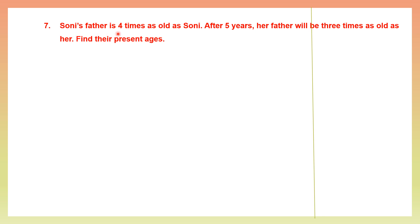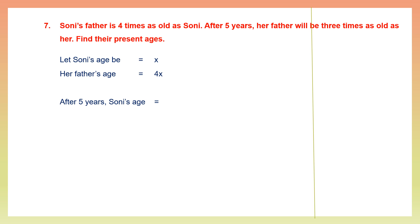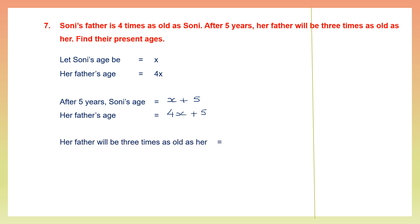Question 7: Soni's father is 4 times as old as Soni. After 5 years, her father will be 3 times as old as her. Find their present ages. Let Soni's age be x. Her father is 4 times her age, so that is 4x. After 5 years, Soni's age will be x plus 5 and her father's age will be 4x plus 5.